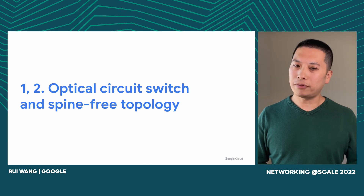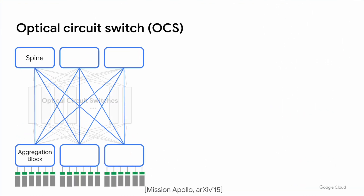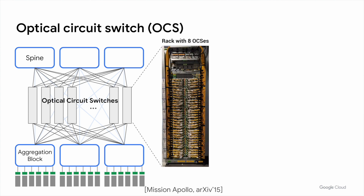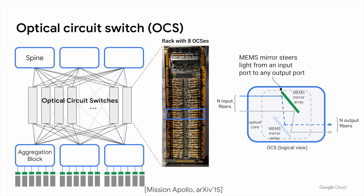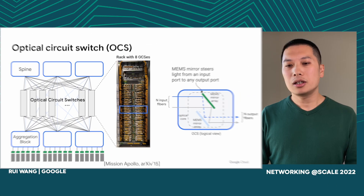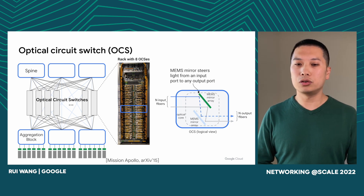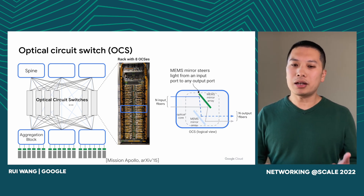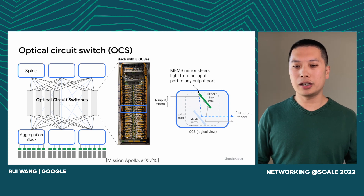First, we want to talk about optical circuit switches and spine-free topology. Roughly eight years ago, we introduced optical circuit switches as the interconnection and inter-operation layer between aggregation blocks and spine blocks. Here is a picture of a rack with eight optical circuit switches. Each OCS contains two arrays of mirrors that can steer light from any input port to any output port. This layer of indirection allows us to not only incrementally add aggregation blocks, but also spine blocks without incurring a building-wide rewiring exercise. A nice thing about OCS is that it's data-rate agnostic, so it doesn't need to be upgraded while the rest of the network transitions from 100G to 200G, 400G, and beyond.